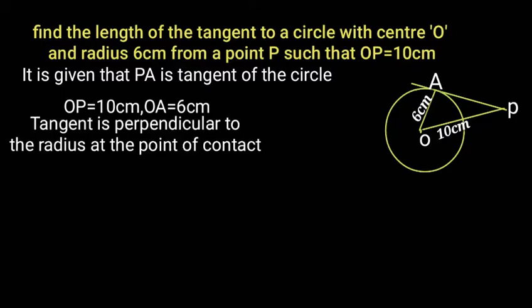Tangent is perpendicular to the radius at the point of contact. Therefore, OA is perpendicular to PA, and angle PAO is equal to 90 degrees.